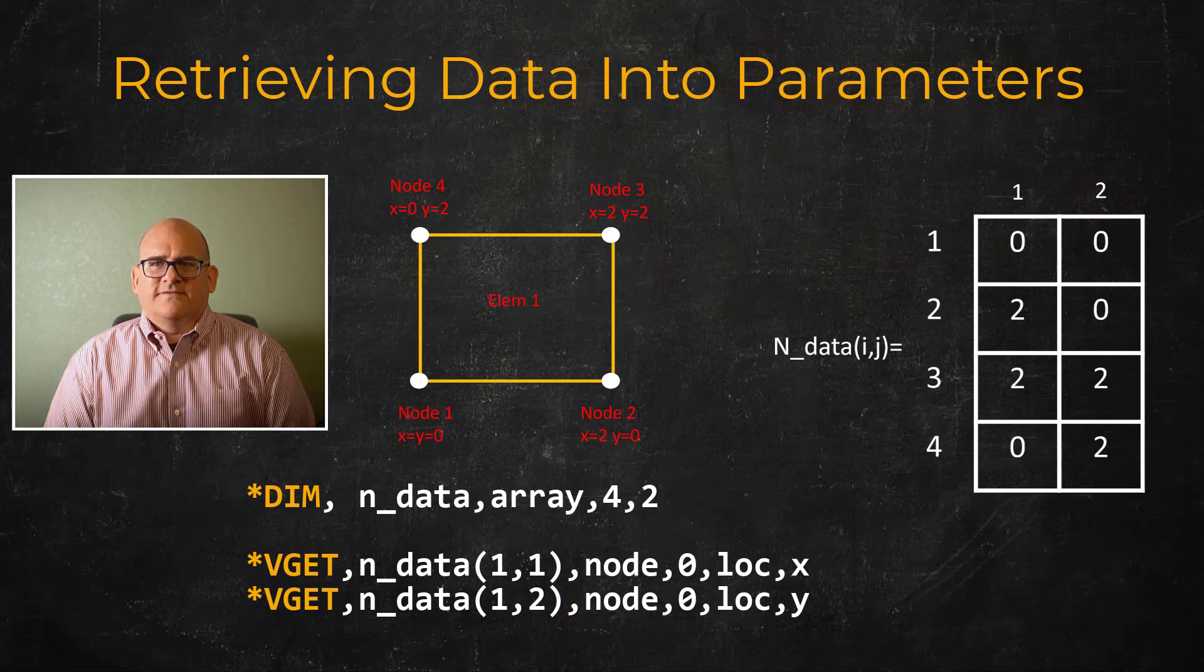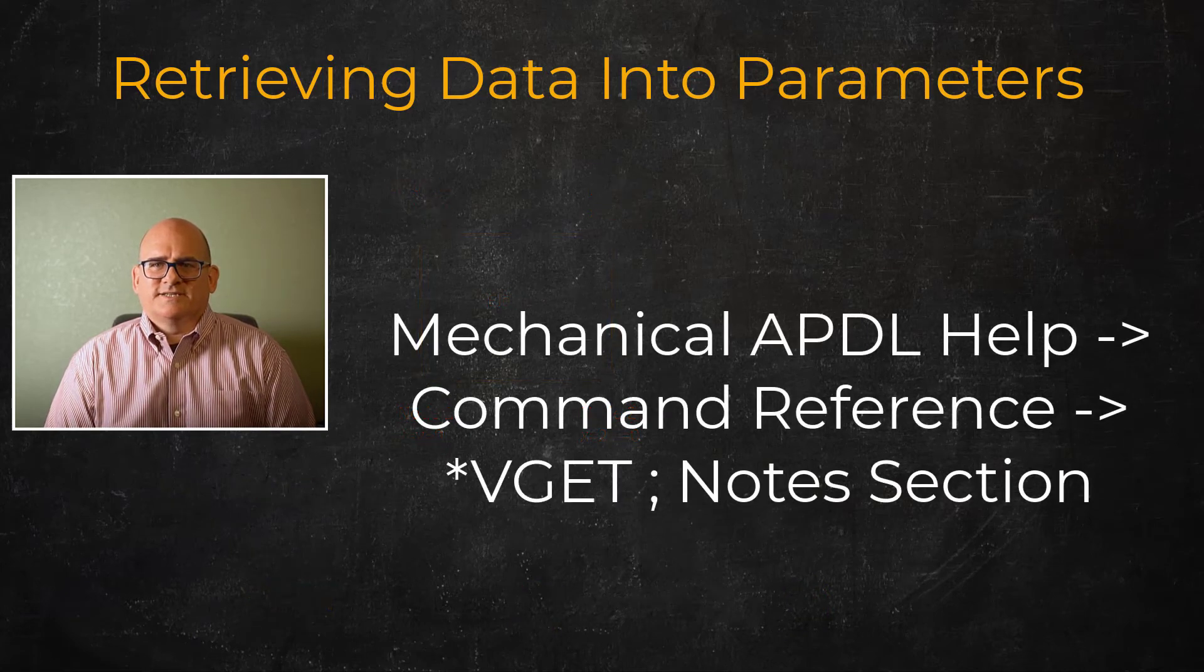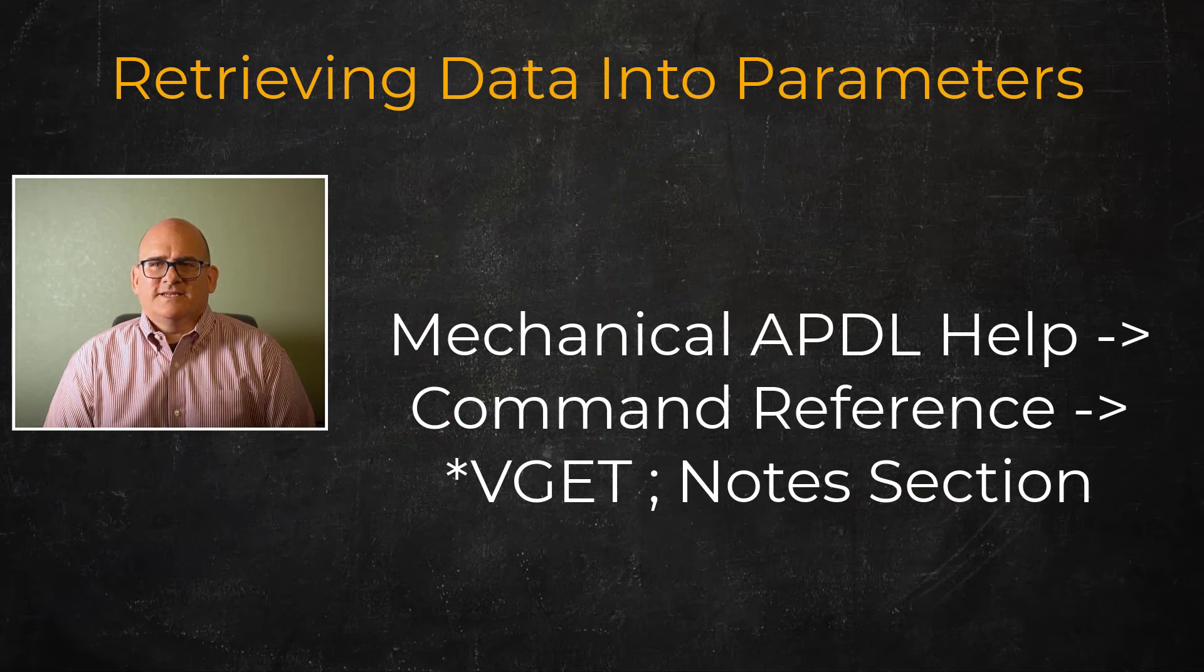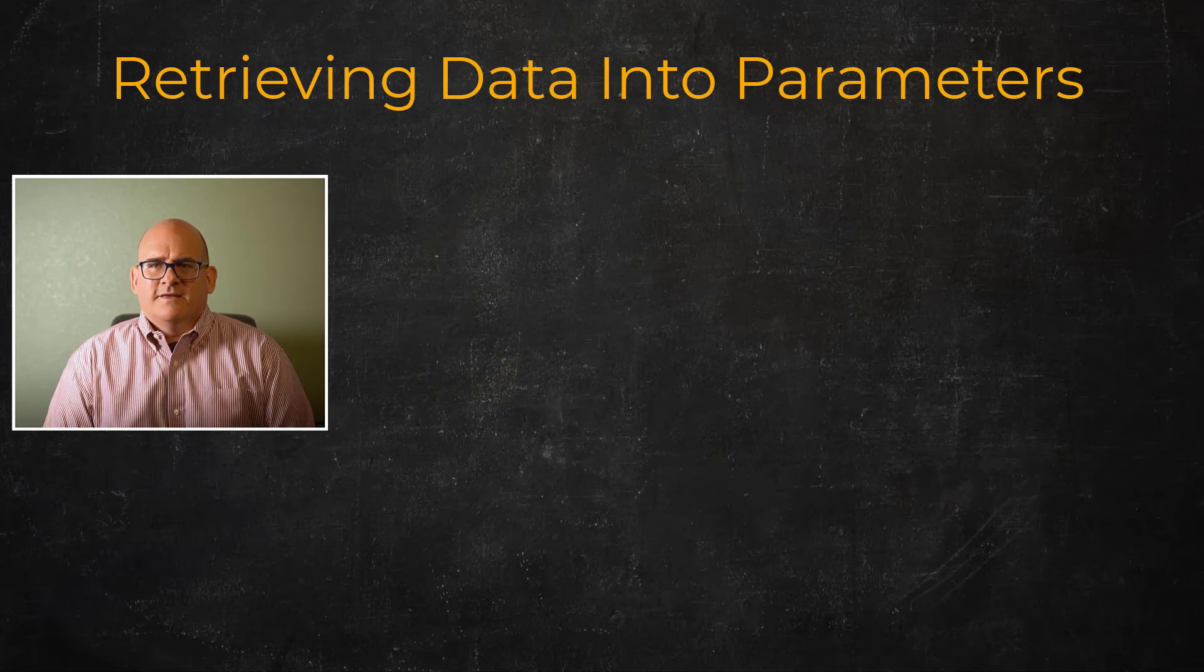Though the list of items that can be retrieved is shorter as there are fewer items that exist for multiple entities, the list of items that can be retrieved is still quite long. Again, please see the Mechanical APDL command guide entry on *VGET for the full list. That completes the lesson portion, so let's move on to the workshop.